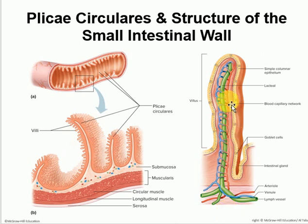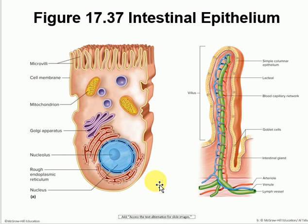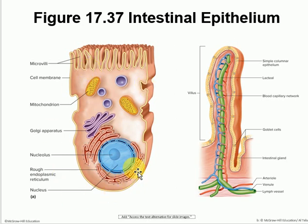Everything that we absorb goes through the blood supply, except for fat — most fat is absorbed and goes to the lacteals first, or the lymphatic system, before it is dumped into the circulatory system. You can also see all four layers: the mucosa, the submucosa, the muscularis, and the serosa, just like throughout all the alimentary canal. Even the simple columnar epithelium on top has microvilli, again trying to increase the surface area as much as possible and increase the contact between the small intestinal mucosa and the contents passing by.